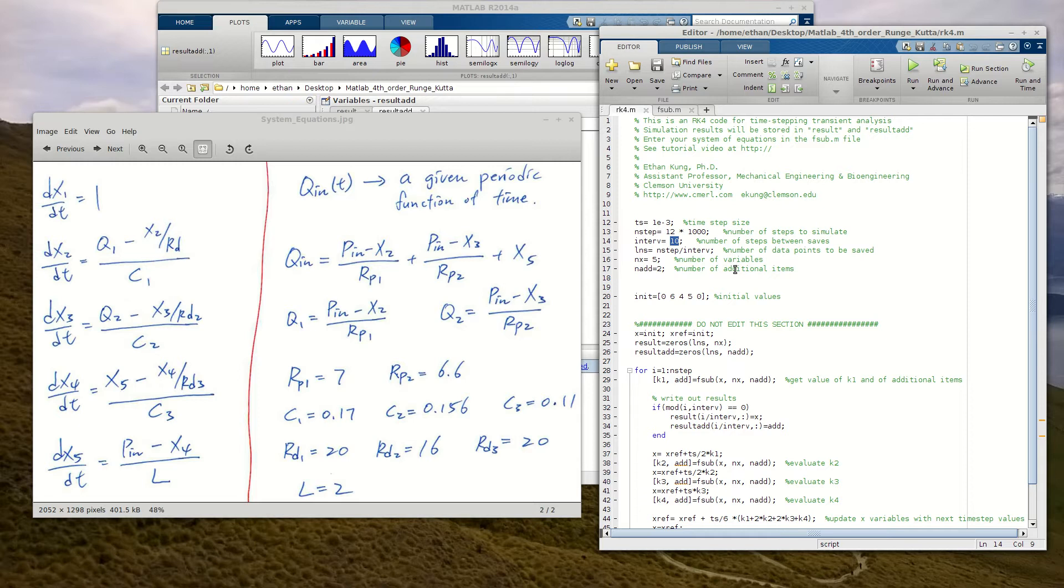And then here, you can specify how often you want to save the simulation results. So you might not want to save every single time step, because you might want to use very fine time step to get accurate simulation, but then you only want results once in a while. So you can say, okay, I only want to save the result every 10 time steps.